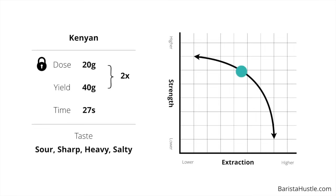Back to the Kenyan. Our espresso is tasting sour, sharp, heavy and strong. Acidity is great but aggressive sourness is something else. Because it's also pretty heavy and rich, we know that the espresso is strong and under-extracted — a really easy problem in espresso brewing because it can be fixed just by increasing the yield.